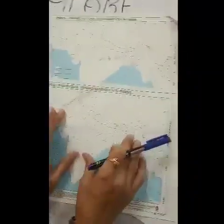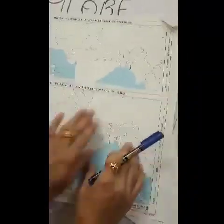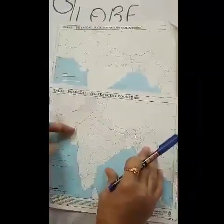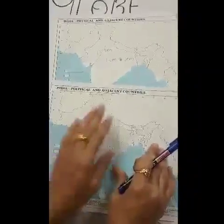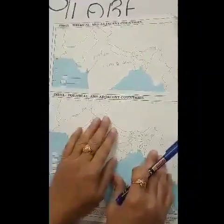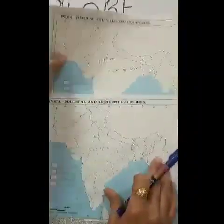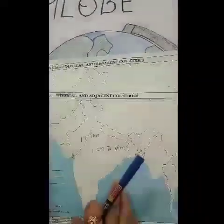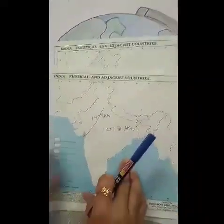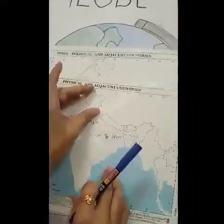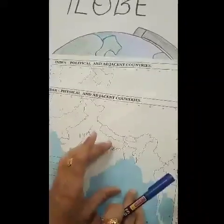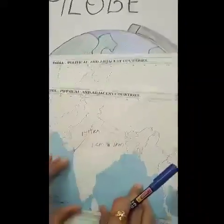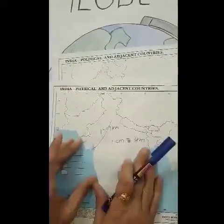In a political map, we can show countries' boundaries, capitals and cities. And this is the physical map of India. In a physical map, we show mountains, plains, plateaus and hills.